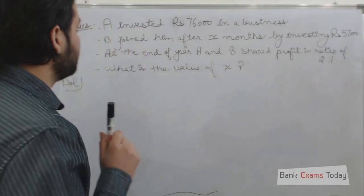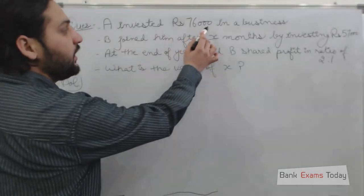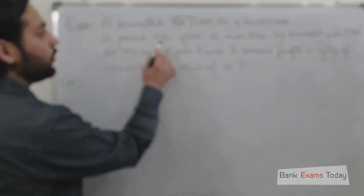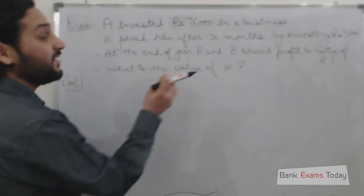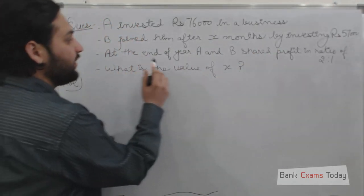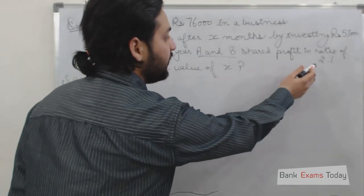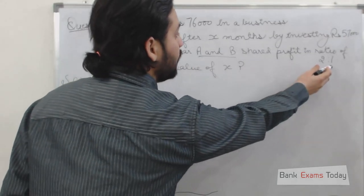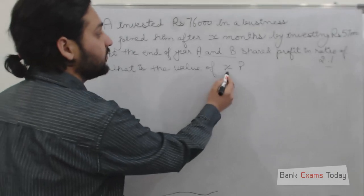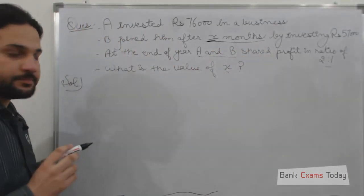Okay, let's take a simple example. If A invested rupees 76,000 in a business, B joined him after X months by investing rupees 57,000. At the end of the year, A and B share the profit in a ratio of 2:1. What is the value of X? X is the number of months after which B joined the business.